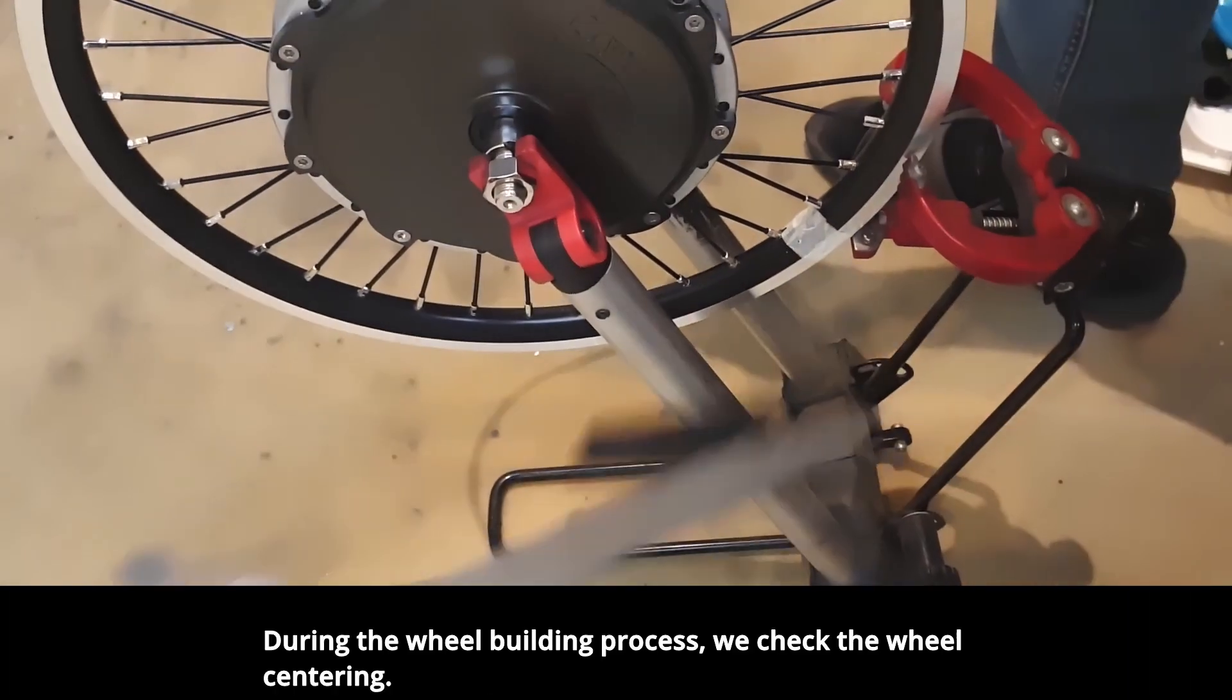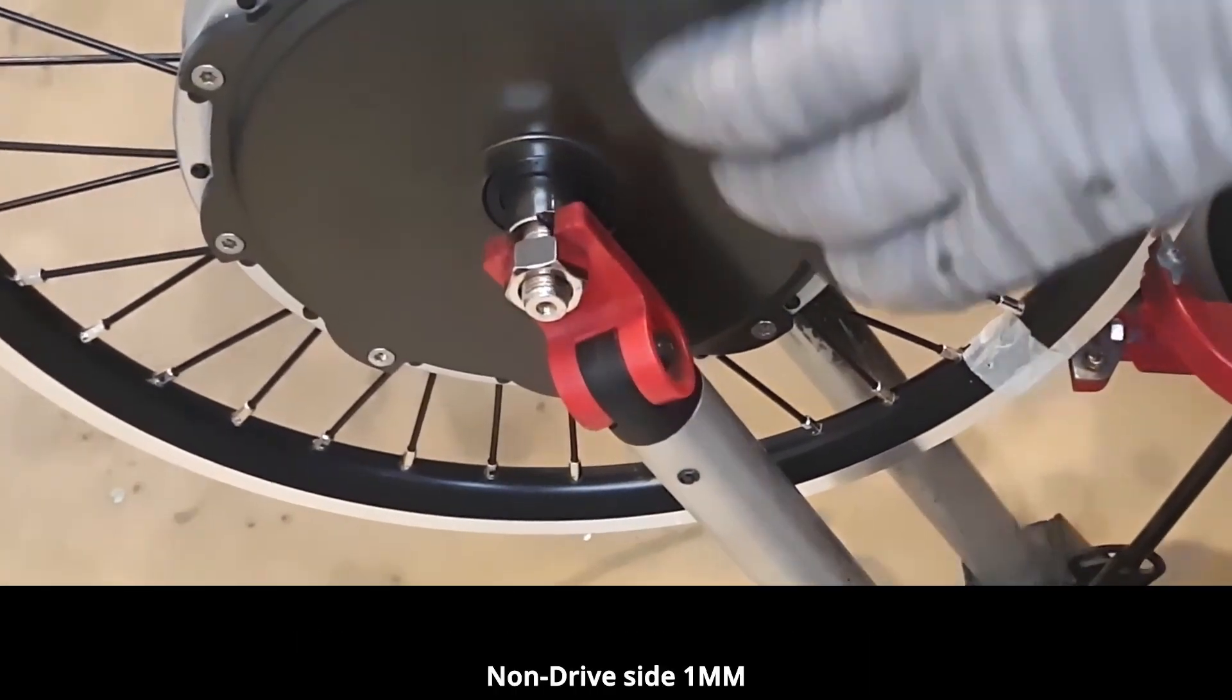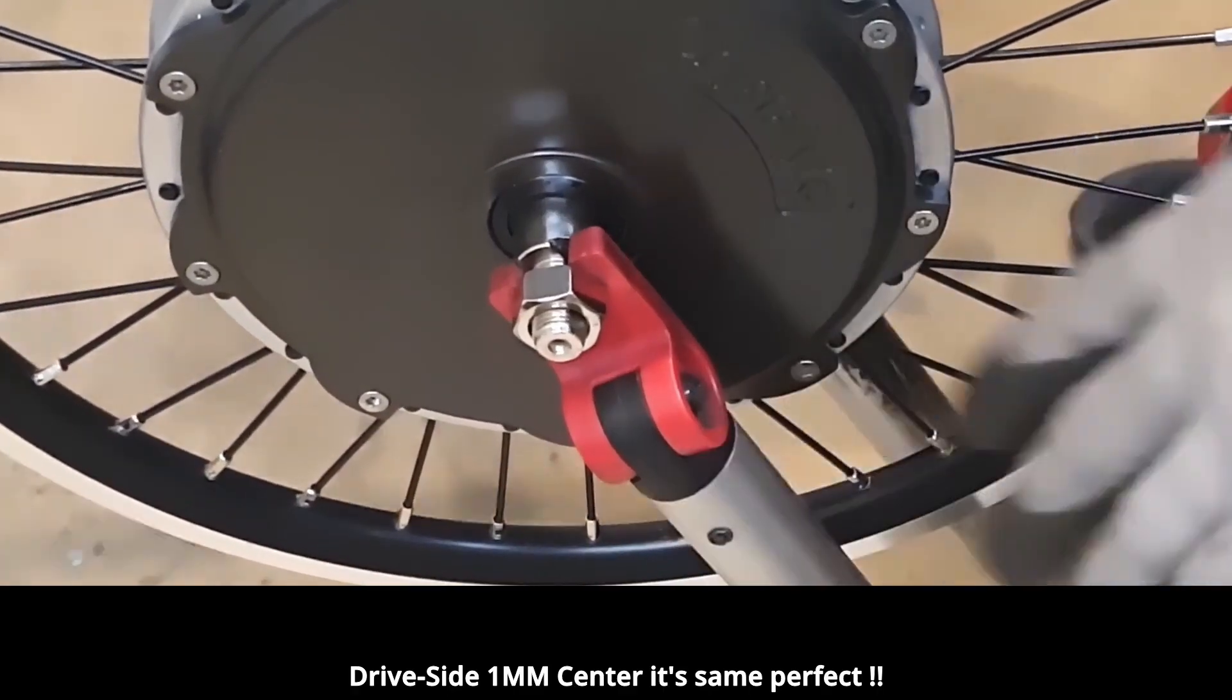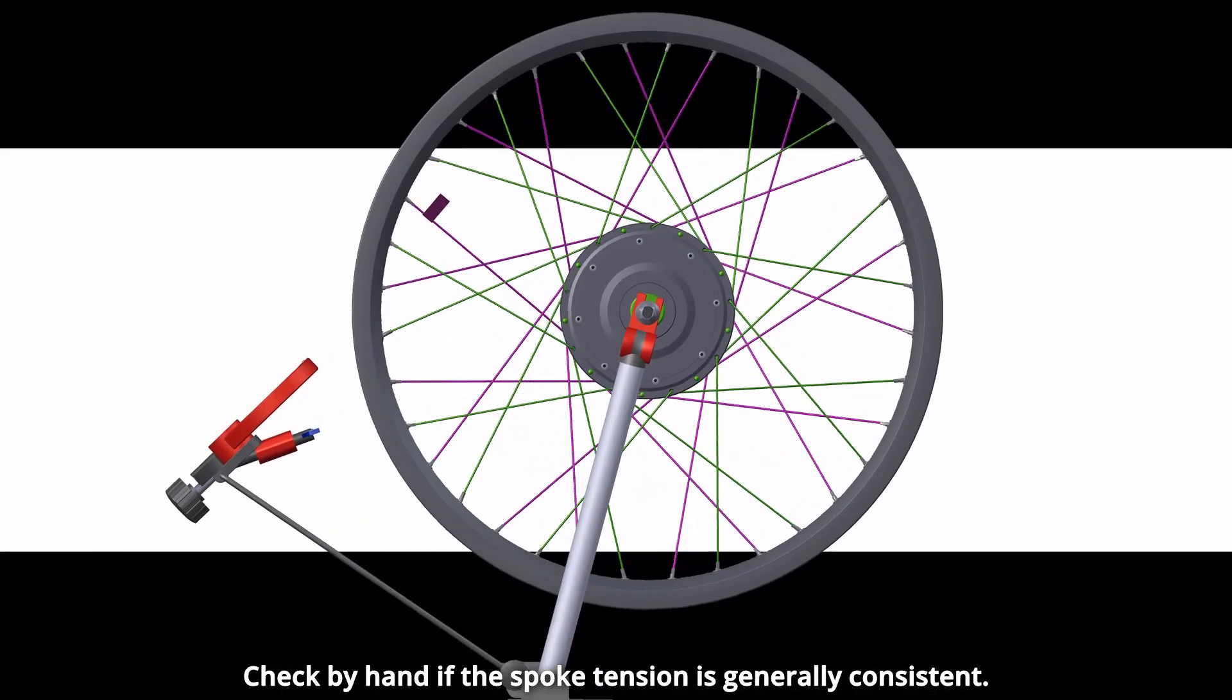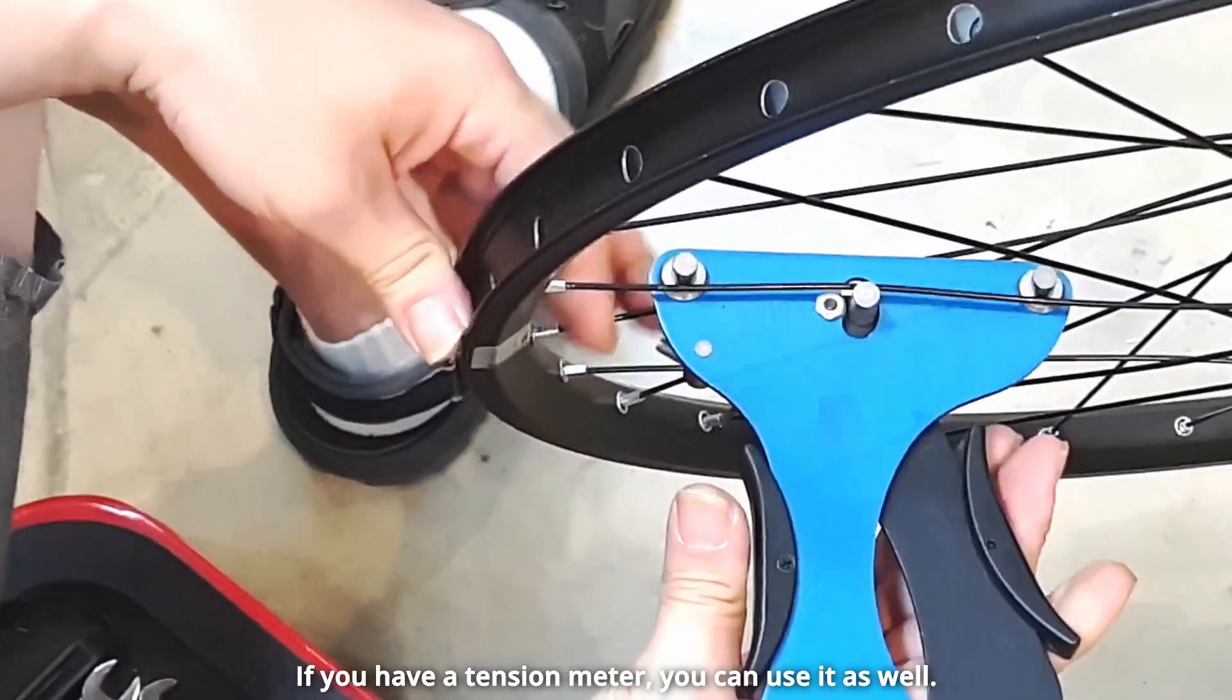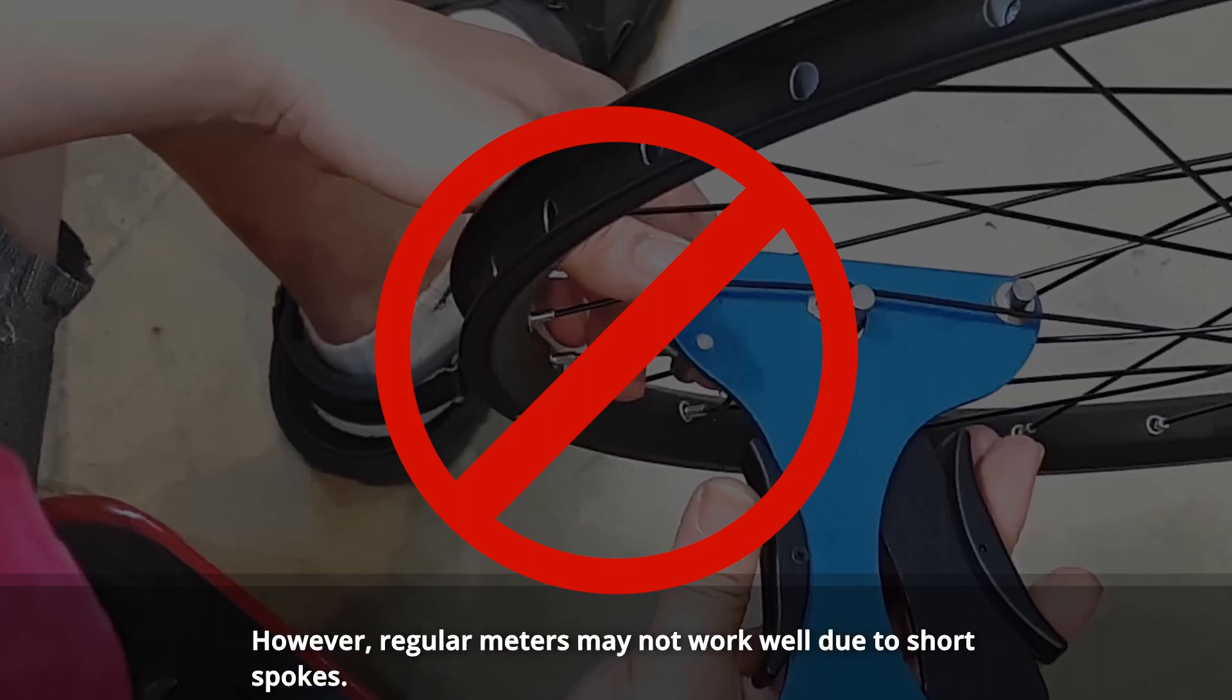During the wheel building process, we check the wheel centering. Check by hand if the spoke tension is generally consistent. If you have a tension meter, you can use it as well.